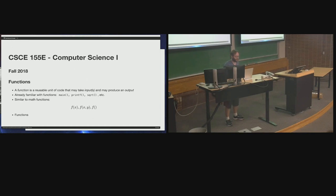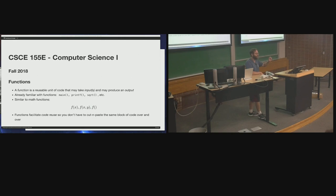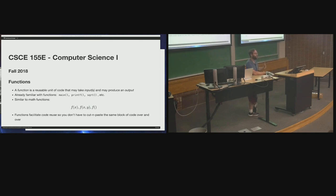Why do we do functions? Functions facilitate code reuse. They're a reusable piece of code, so you don't have to cut and paste the same block of code over and over. Instead, if you've got a piece of common functionality — say these three lines of code do something very useful — and you use it in multiple different places, that's screaming out to you. Put that in a function so it's reusable. You could write your own square root function. Why would you cut and paste those six lines of code over and over when you just need to compute a square root?